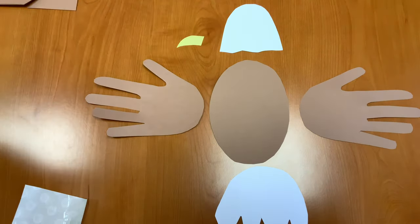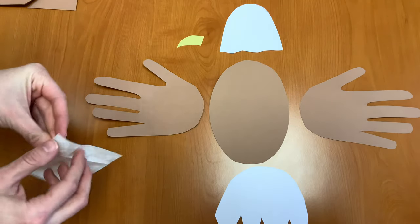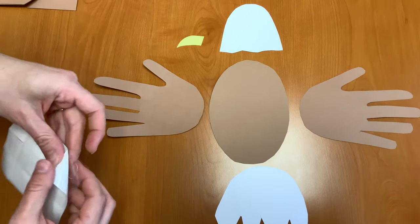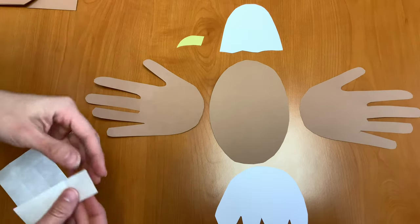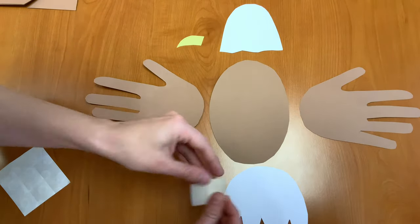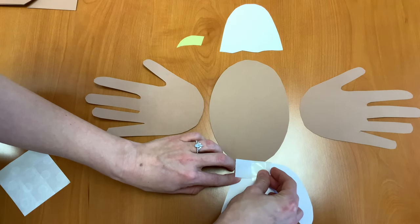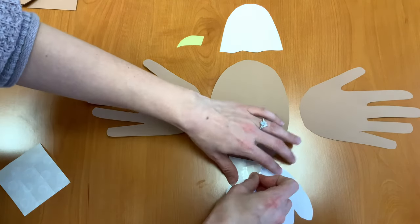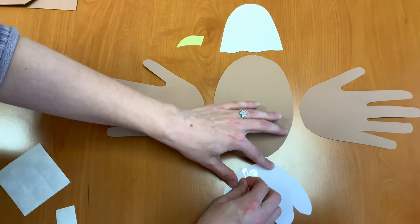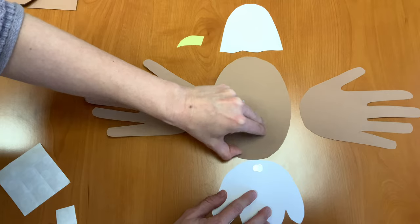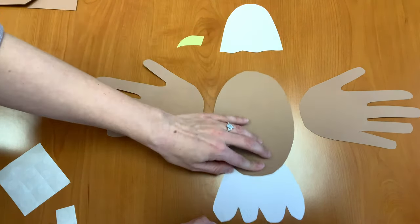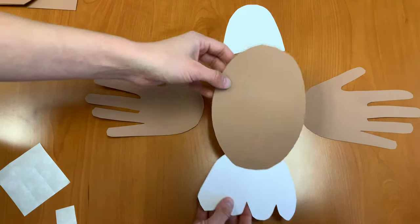So next we need to assemble our bald eagle. We're going to take some glue dots, and let's start with the tail. I'm going to put a glue dot on the top of the tail. If I can get this piece of plastic off. And then I'm going to stick the tail underneath. Just like that. So now we have the tail and the body.